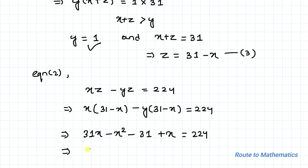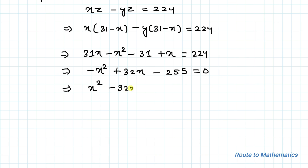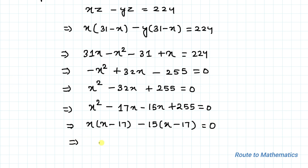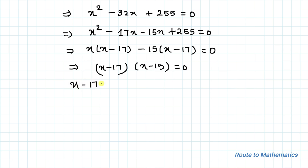Taking all terms to the left-hand side, we have -x² + 32x - 255 = 0, which can be rewritten as x² - 32x + 255 = 0. We factorize this quadratic by the middle term splitting method: x² - 17x - 15x + 255 = 0, giving us x·(x - 17) - 15·(x - 17) = 0, so (x - 17)·(x - 15) = 0.